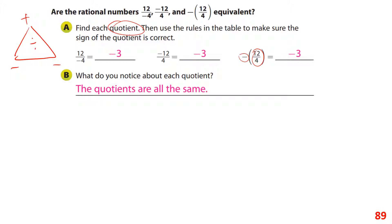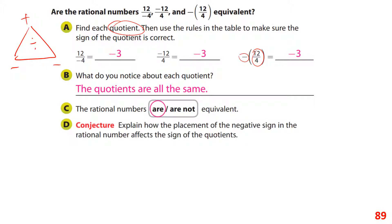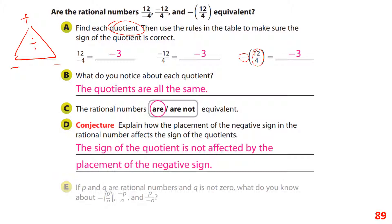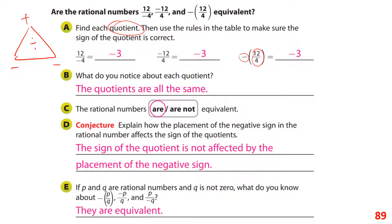The quotients are all the same — the answers to those division problems are all equivalent. The big point is it really doesn't matter where the negative is placed. The quotient is not affected by the placement of the negative sign — whether it's in the numerator, the denominator, or outside the fraction entirely, the answer is still negative.